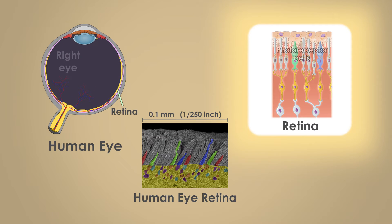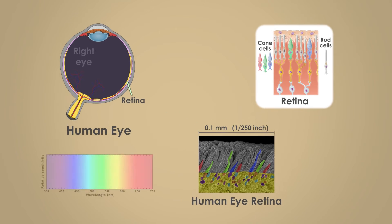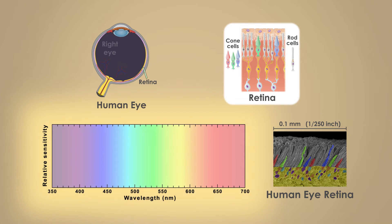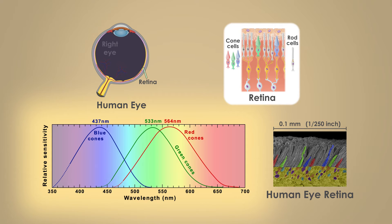There are two types of photoreceptor cells: cone cells and rod cells. Cone cells provide you with highly detailed color vision, but only work in well-lit conditions. Rod cells work in low light, but can't see colors or find detail. Cone cells come in three variants, and each variant is most sensitive to a different color. Likewise, common camera sensors have three variants of pixels, with different sensitivities depending on color.